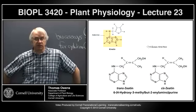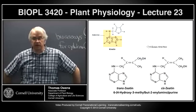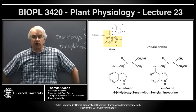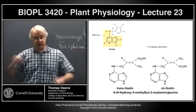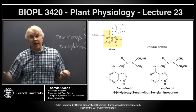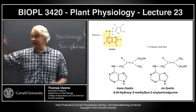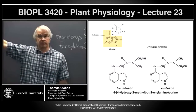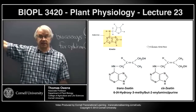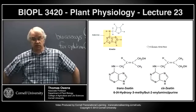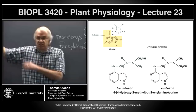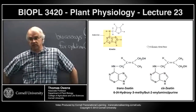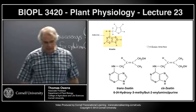The presence of zeatin in transfer RNAs of all organisms has nothing to do with their activity as cytokinins in plants. There is a separate biosynthetic pathway. The function of these modified adenines in transfer RNAs is not well understood, but it is understood that it has nothing to do with cytokinin function in plants. The synthesis of cytokinins has nothing to do with transfer RNAs.